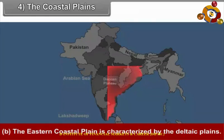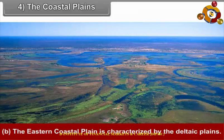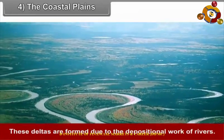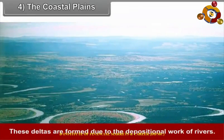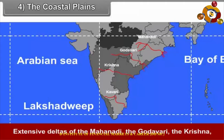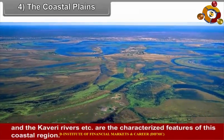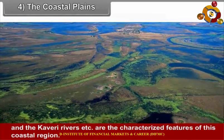The Eastern Coastal Plain is characterized by deltaic plains. These deltas are formed due to the depositional work of rivers. Extensive deltas of the Mahanadi, the Godavari, the Krishna, and the Kaveri rivers are the characteristic features of this coastal region.